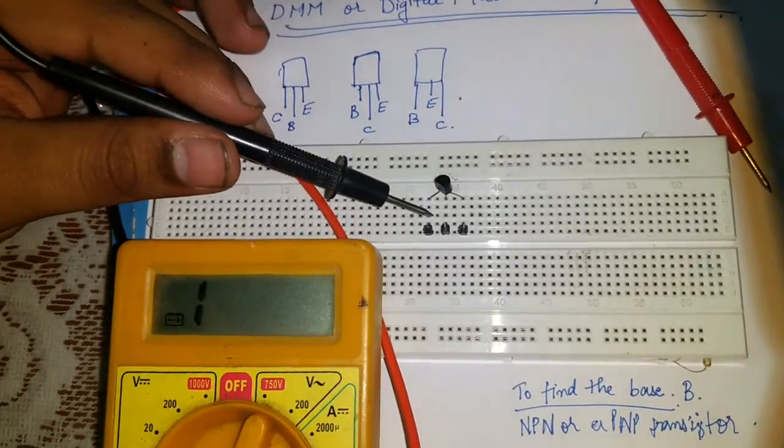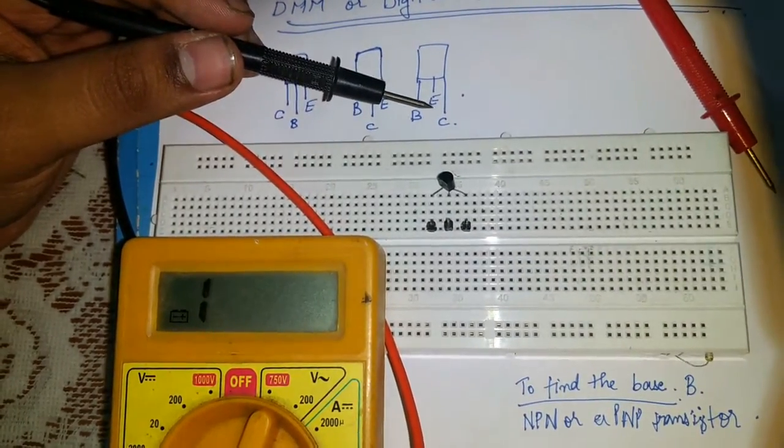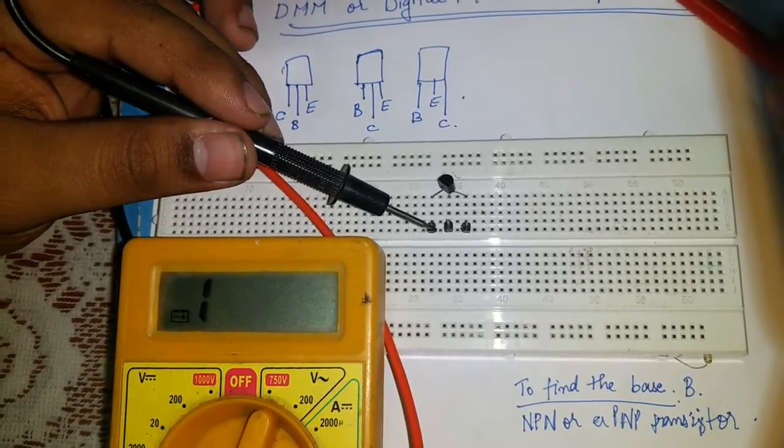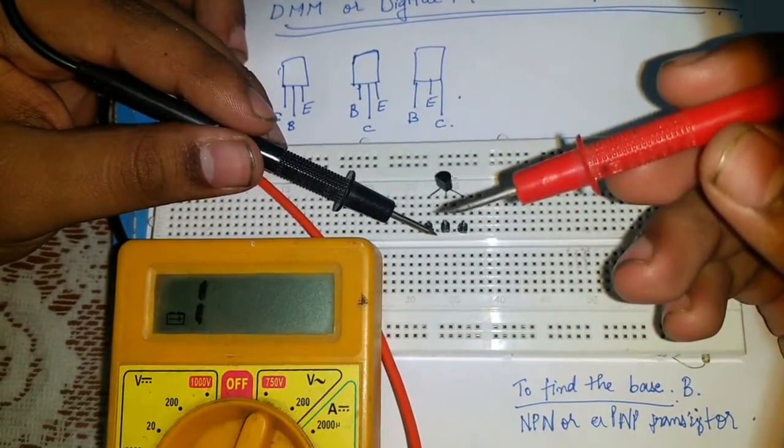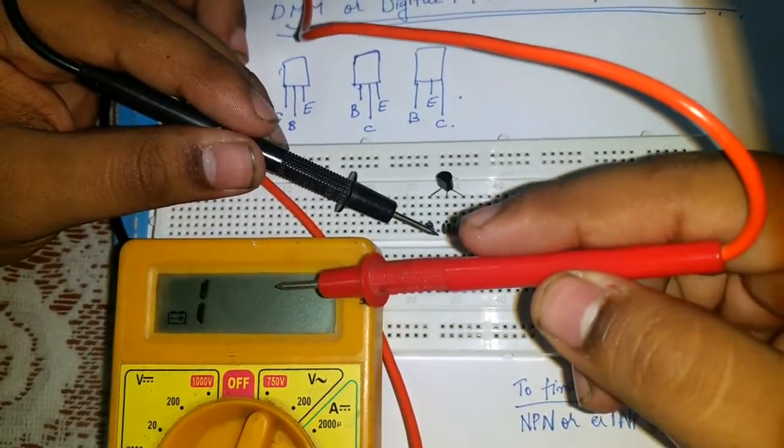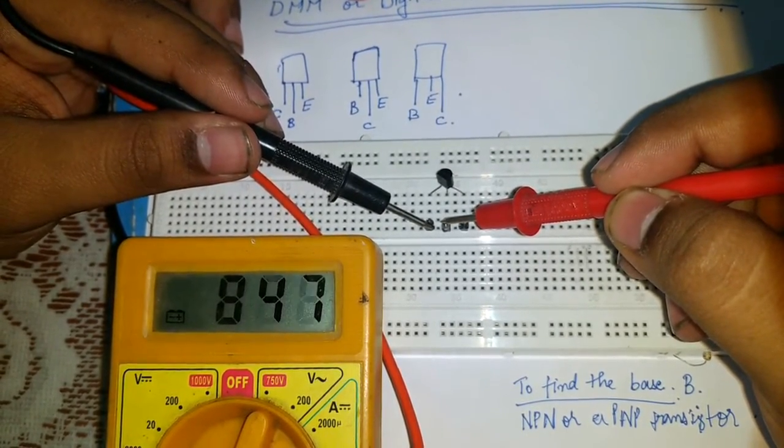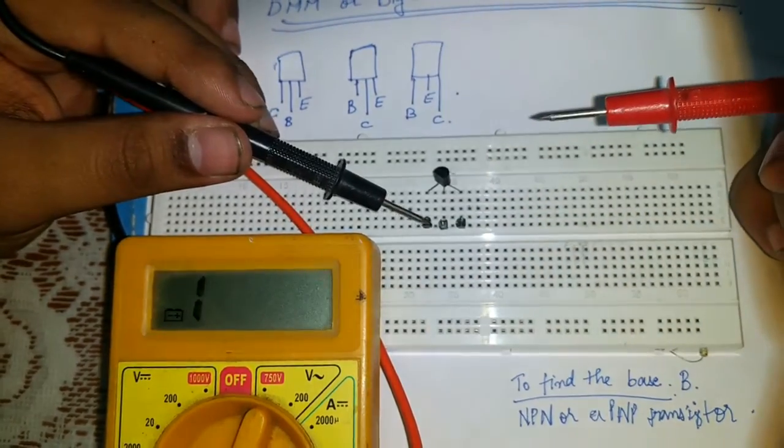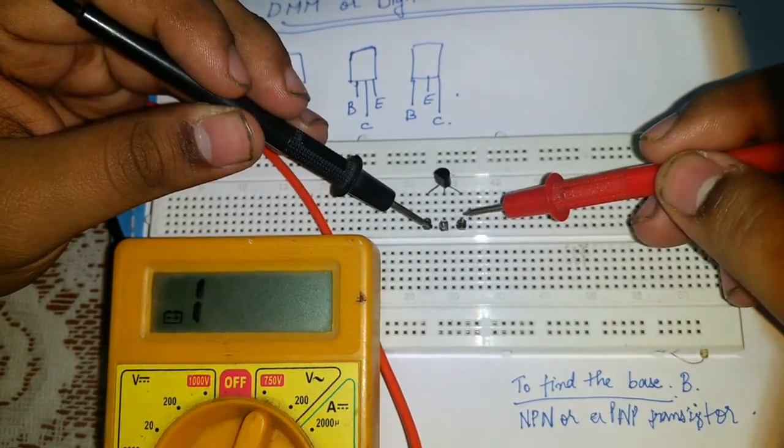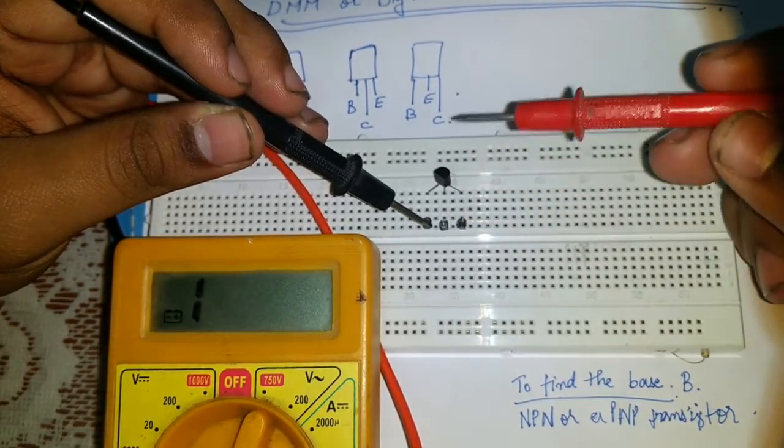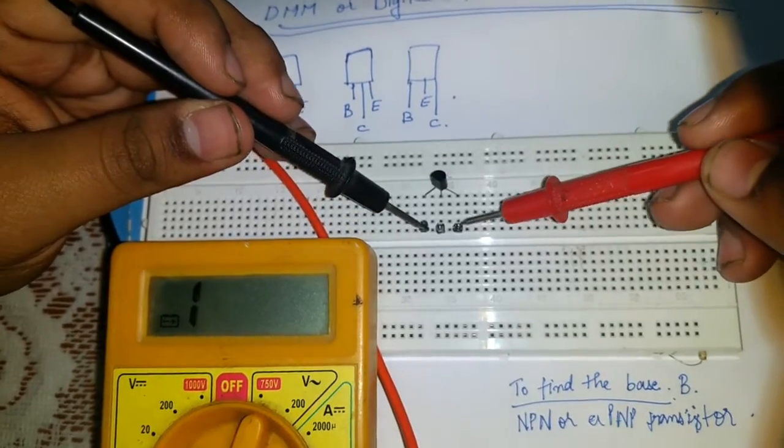So how we will do it. First we put the black pin in any of the terminal. Well, I am naming it as 1, 2 and 3. I am putting this black pin in terminal number 1 and we will check whether putting the red pin, the ohm meter or digital multimeter is deflecting or not. We are getting a value, but that doesn't determine that it is a base.